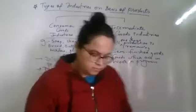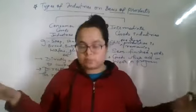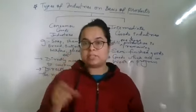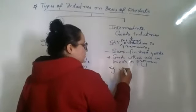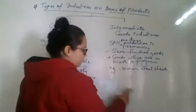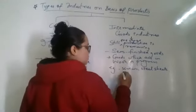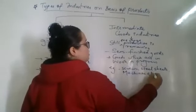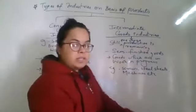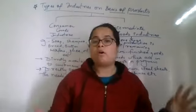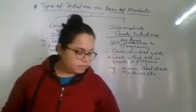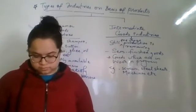Examples of intermediate goods are steel sheets, machines, screwdrivers, small machines, screws, etc. And the companies that make all these things, we call intermediate goods industries. So we have consumer goods industries and intermediate goods industries. Is this clear? Okay, thank you.